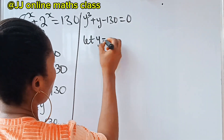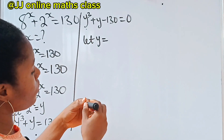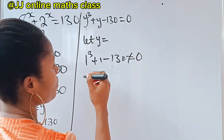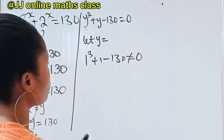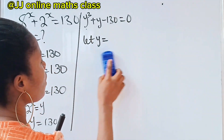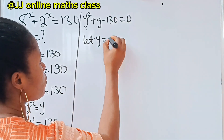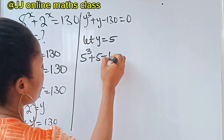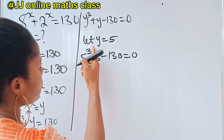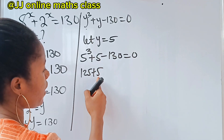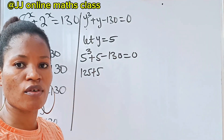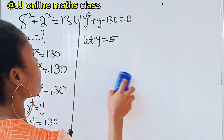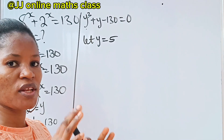Starting from y equals 1: 1 to the power of 3 plus 1 minus 130 is not equal to 0, so y is not 1. But if we say y equals 5, you will notice that 5 to the power of 3 plus 5 minus 130 gives us 0, because 5 cubed is 125, plus 5 is 130, and 130 minus 130 is 0. So we have found the first value: y equals 5.